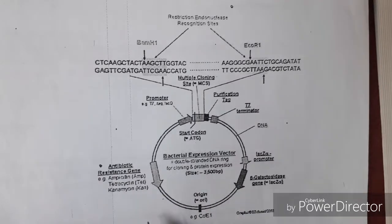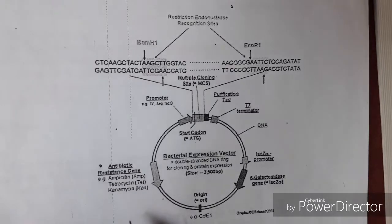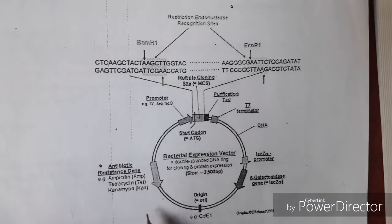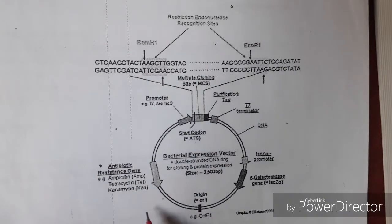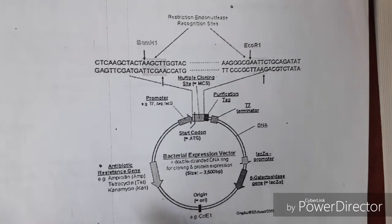In this way, we use the expression vector to overcome all the problems that eukaryotic DNA faces in bacterial machinery. We use expression vectors to express a desired gene, determine the functionality of a protein, and confirm whether a gene is responsible for the formation of a particular protein. These are very much used in the field of recombinant DNA technology and have their specific importance. Thank you.